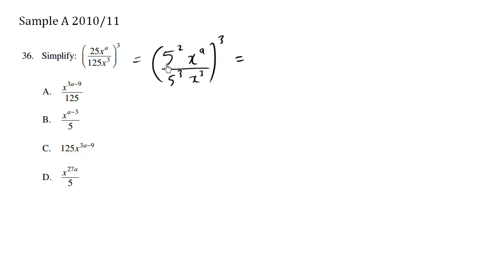So within this bracket, I see there is the same base to some exponent divided by the same base to some exponent. The 5 and the 5, they're the same. So we're allowed to subtract the exponents. So the exponent here is going to be 2 minus 3.